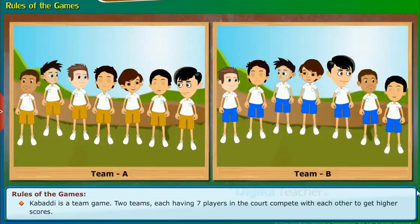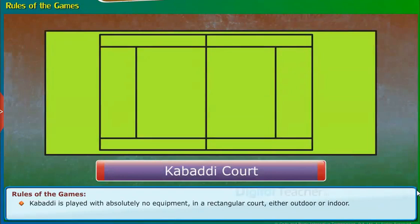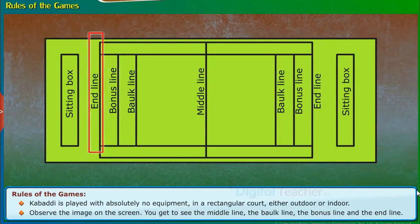Kabaddi is a team game. Two teams, each having seven players in the court, compete with each other to get higher scores. Kabaddi is played with absolutely no equipment in a rectangular court, either outdoor or indoor. Observe the image on the screen. You get to see the middle line, the bulk line, the bonus line, and the end line.